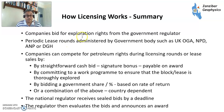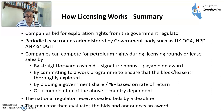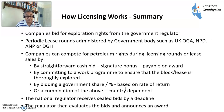So just a quick summary of how it works. Companies bid for exploration rights from the government regulator in periodic lease rounds administered by government bodies such as the United Kingdom NSTA, Norwegian Petroleum Directorate, National Petroleum Licensing ANP, or DGH in India. Companies compete for petroleum rights by either a straightforward cash bid — also known as a signature bonus, payable on award — by committing to a work program, by bidding share and rate of return in many PSAs, or a combination of the above. The national regulator receives sealed bids by a deadline, then evaluates them and makes an award.